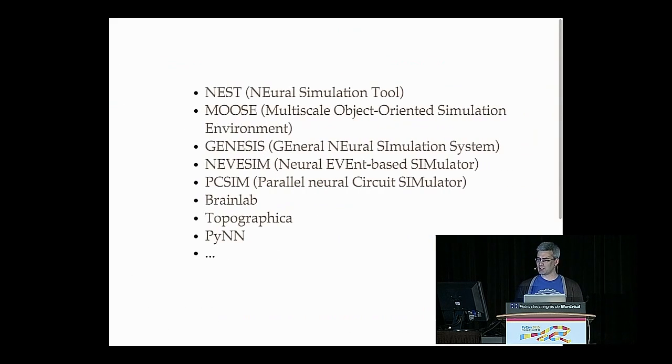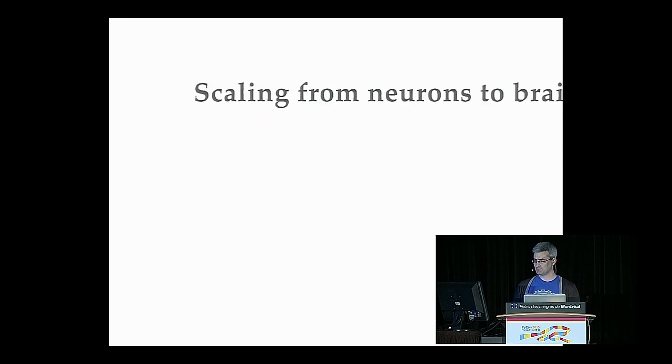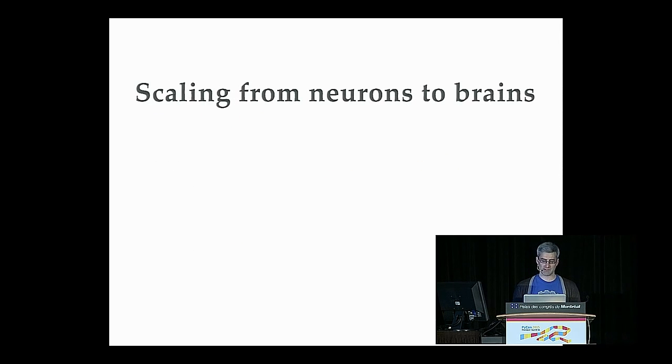And so the question is, how do we scale up these simulations from neural simulators, of which there are many? So these are eight examples in Python, but there are actually quite a few more. How do we scale up these types of simulations to something that's brain-like and something that you could say has some kind of intelligence? So scaling from neurons to brains. People have been trying to tackle this problem for quite a while, and have come up with a bunch of different options.